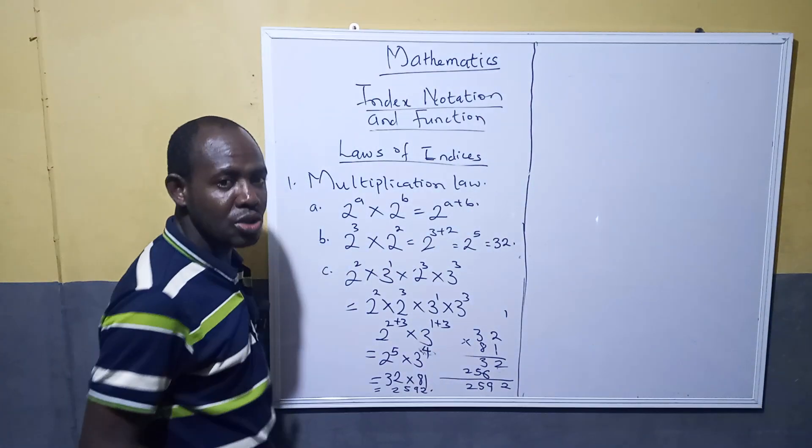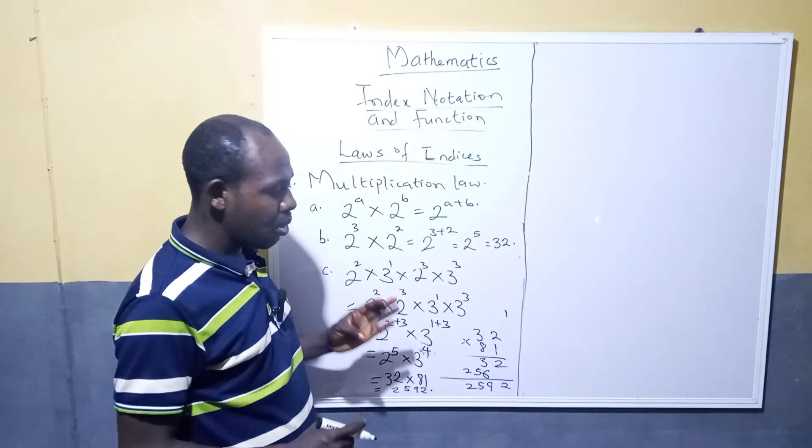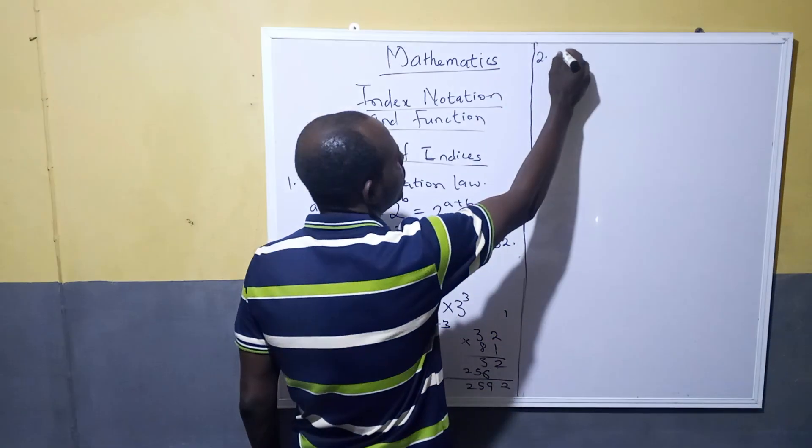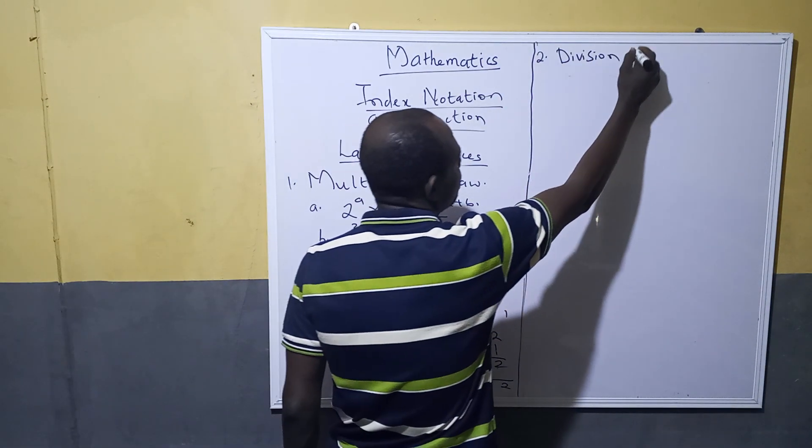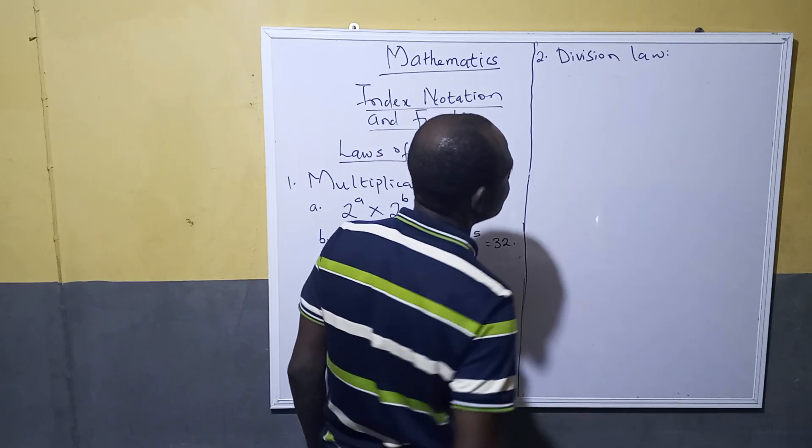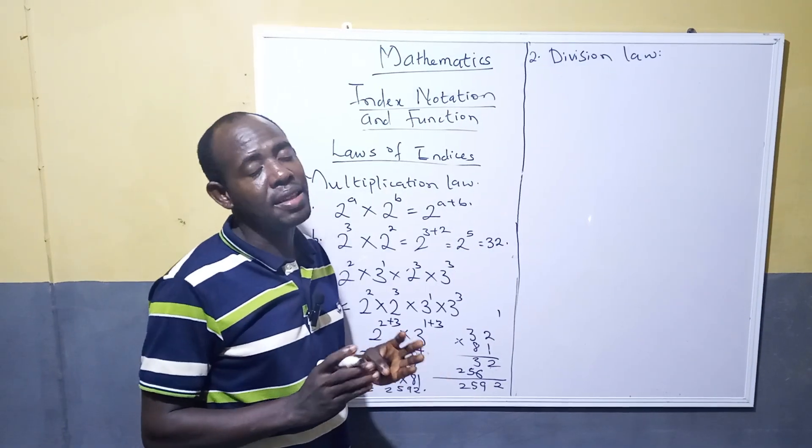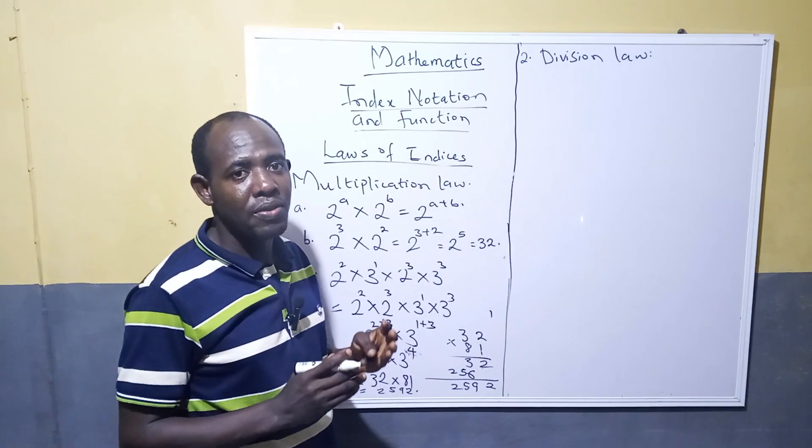So that's all about multiplication law. Now the second one we're looking at is division law. This law says that when you have numbers which bases are the same and you want to divide them, then you can subtract the divisor from the dividend.